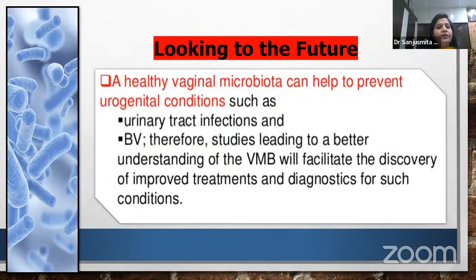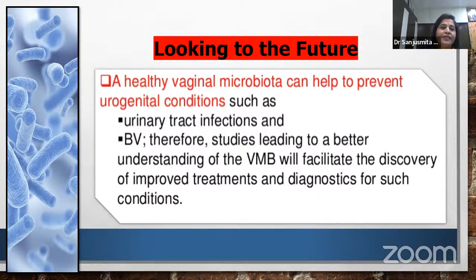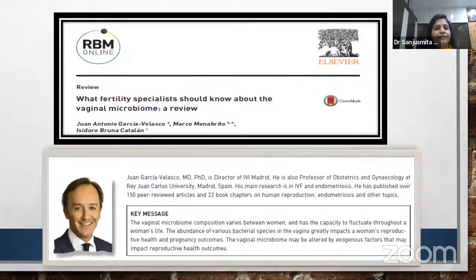Looking to the future: a healthy vaginal microbiota can help prevent urogenital conditions such as urinary tract infection and bacterial vaginosis. Therefore, studies leading to a better understanding of the vaginal microbiome, which has still received less attention, should facilitate the discovery of improved treatments and diagnostics for such conditions.